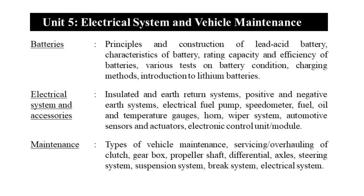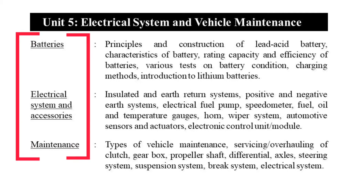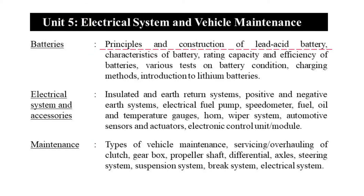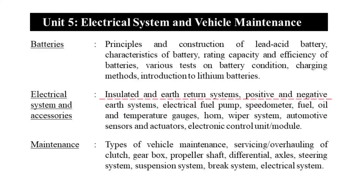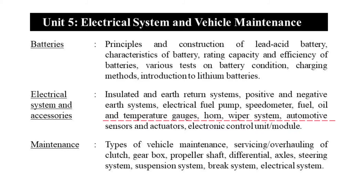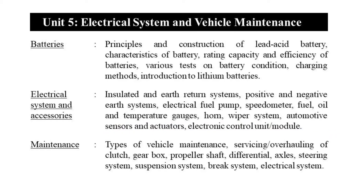The fifth unit is Electrical System and Vehicle Maintenance. Under batteries, we study principles and construction of lead-acid batteries, battery characteristics, rating, capacity and efficiency, various tests on battery condition, charging methods, and introduction to lithium batteries. Under electrical systems and accessories: insulated and earth return systems, positive and negative earth systems, electrical fuel pump, speedometer, fuel meter, oil and temperature gauges, wiper systems, automotive sensors and actuators, and ECU. Under maintenance: different types of vehicle maintenance and servicing or overhauling of clutch, gearbox, propeller shaft, and differential.